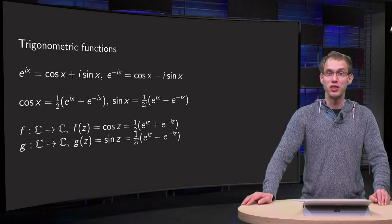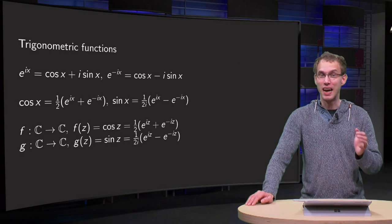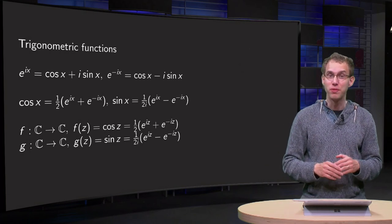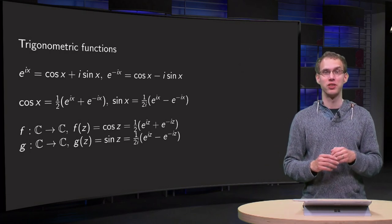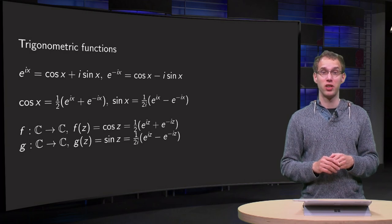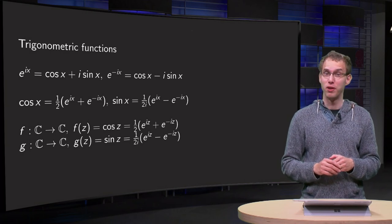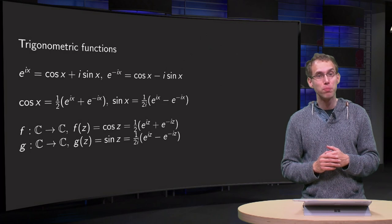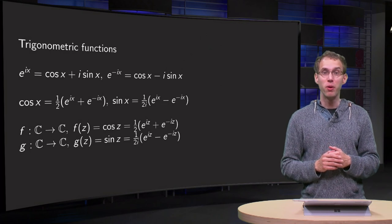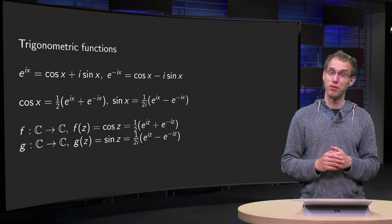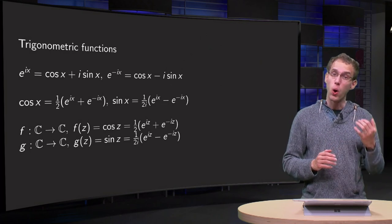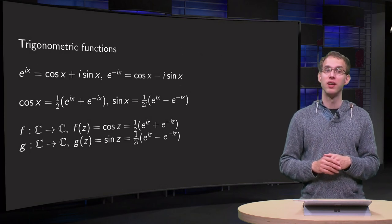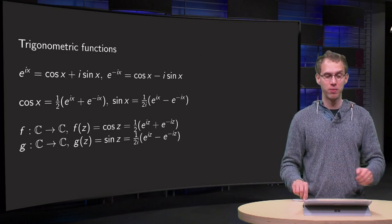Complex trigonometric functions like sine and cosine are combinations of exponentials, which means that these functions are not so difficult. Even better, a lot of the properties we know about the real sine and cosine functions also hold for their complex counterparts. We'll learn a lot of that in this video.